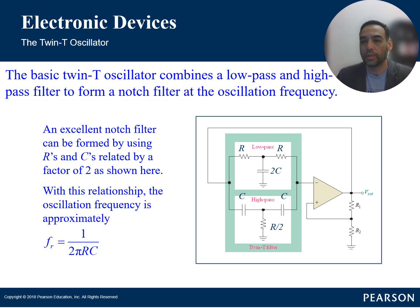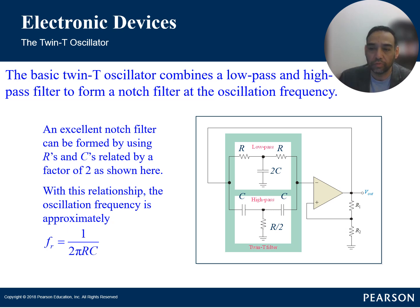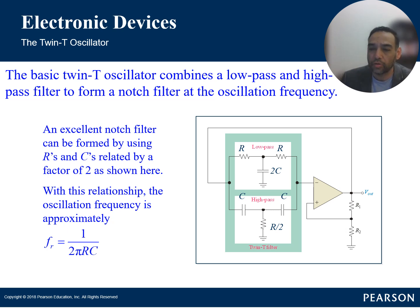The twin-T oscillator is a specific type of oscillator primarily used to generate sine wave signals. It's called a twin-T because it has that two-T shape of the filter network — two R's and one C, and two C's and one R. The networks are composed of capacitors and resistors in that arrangement. Let's talk about it as it relates to the factors of an oscillator.